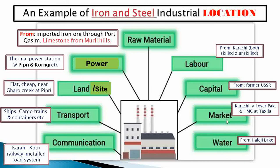The market for iron and steel is in Karachi, all over Pakistan, and particularly at the Heavy Mechanical Complex (HMC) at Taxila in northern Pakistan, where steel produced in Karachi is used as raw material to manufacture industrial parts — such as parts of thermal power stations and sugar mills. Water for the iron and steel industry is available from Haleji Lake, which supplies water to Karachi.